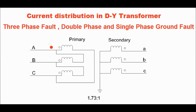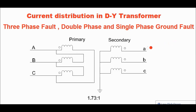Hello friends. Today I will discuss about fault current distribution in case of a delta-star transformer. In this video I will discuss three case studies: three-phase fault, double-phase fault, and single-phase to ground fault in the star side, and what will be the current distribution in the delta side for these types of faults.